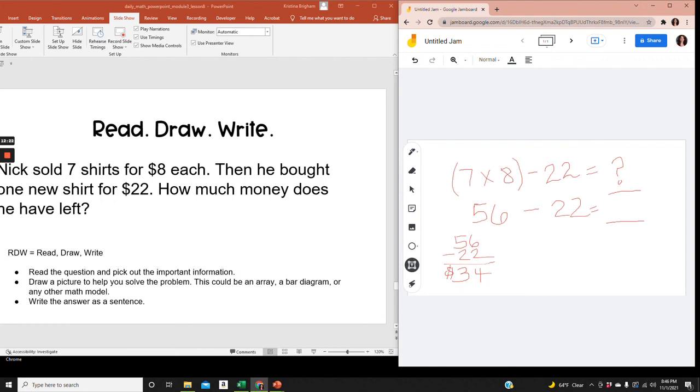The answer is $34. Okay, finally I need to write out complete sentences to answer the question, how much money does he have left? Nick has $34 left. He earned $56 by selling 7 shirts. Then he paid $22 for a new shirt. I subtracted 22 from 56 to find my answer.